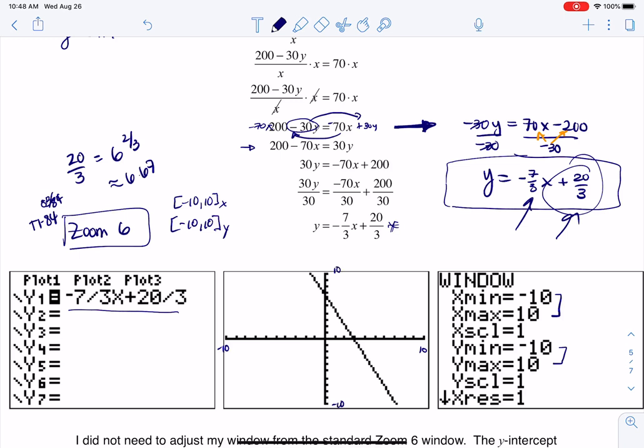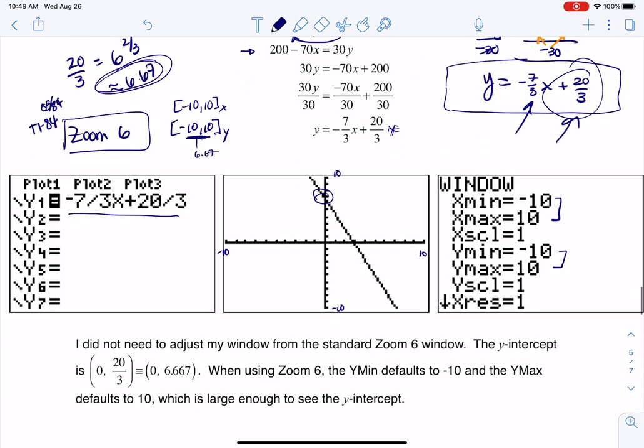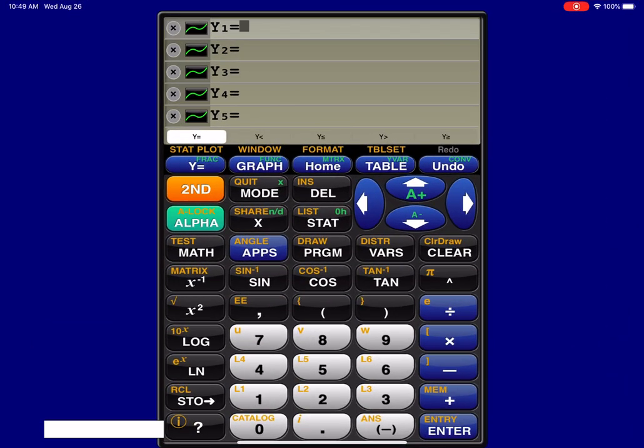I know I'll be able to see the y-intercept because the y-intercept is 6.67 and that's definitely in the span between negative ten to ten and I can see it right there, there is my y-intercept. That's why you see me saying I don't need to adjust my zoom six window, the y-intercept is about 6.7 and when you use zoom six the defaults on the y-axis are negative ten to ten which is large enough to see the y-intercept.